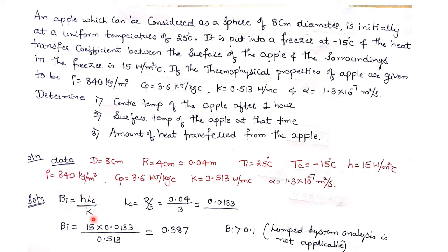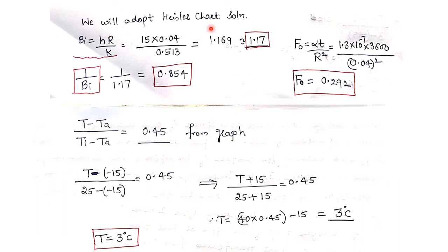Now we calculate the Biot number. Biot number is given by h into Lc divided by k, where the characteristic length Lc for a sphere is r divided by 3. So Lc is 0.04 divided by 3, which equals 0.0133. Substituting: Biot number equals 15 into 0.0133 divided by 0.513, giving 0.387. Since the Biot number is greater than 0.1, the problem cannot be solved using lumped system analysis, so we adopt the Heisler chart solution.